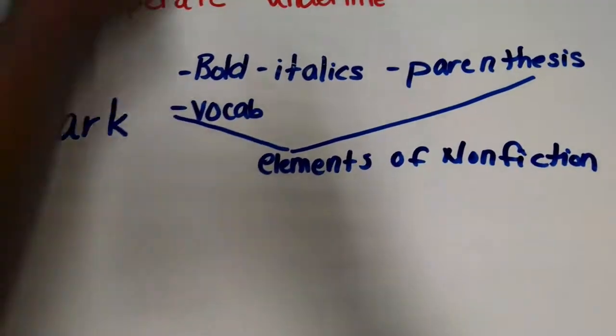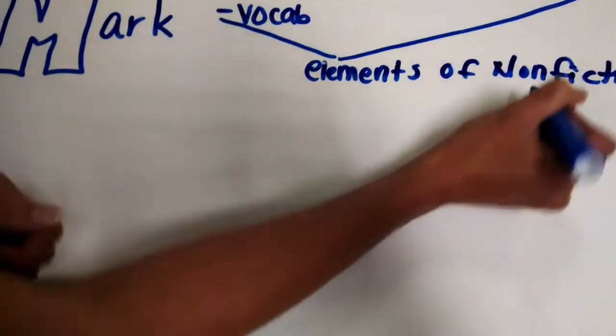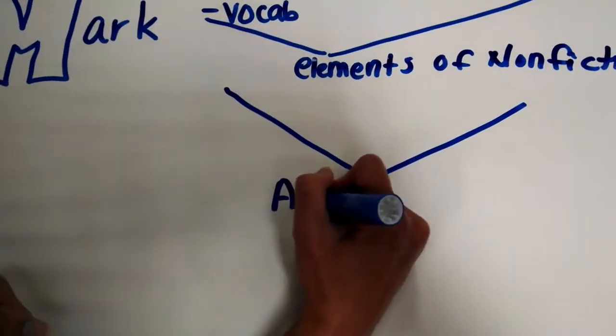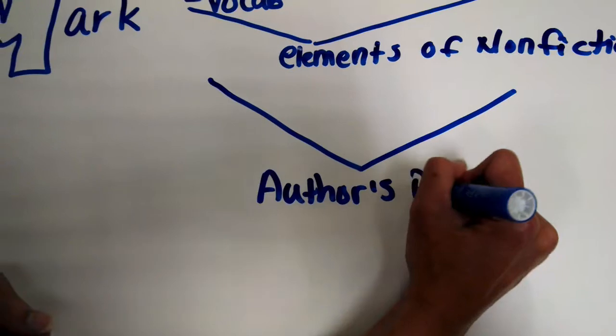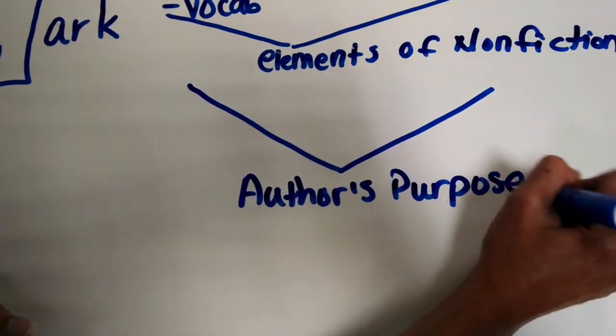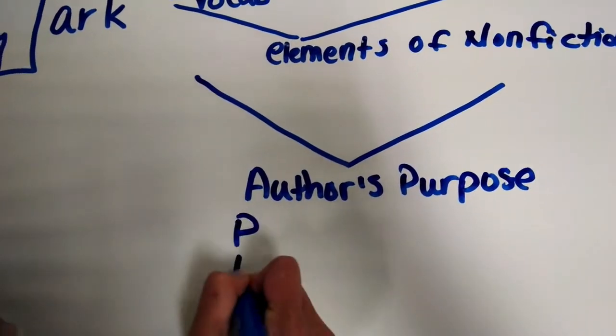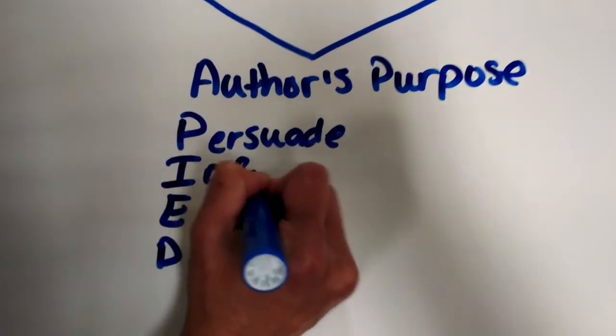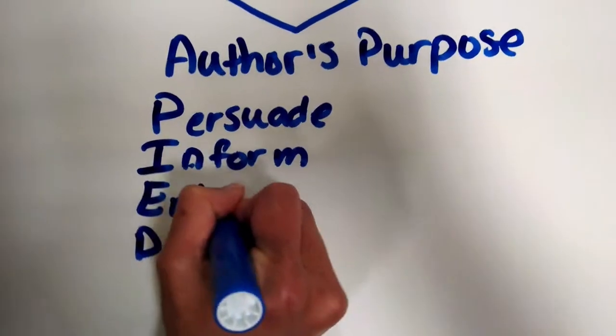So then they decide whether the piece is fiction or non-fiction based on this. This will tell us author's purpose. And then to use the author's purpose, we do 'hide'—persuade, inform, entertain,